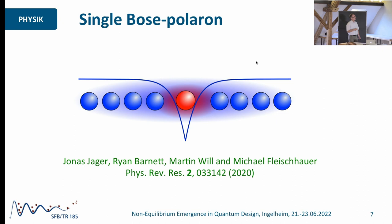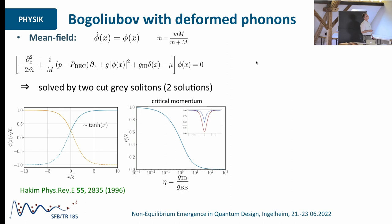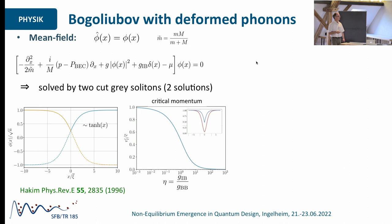Now the first thing is about the single Bose-Polaron. We have a single impurity. What we do is first go into a co-moving frame, co-moving with the impurity, by a so-called Lee-Low-Pines transformation. Then we look at the mean field problem. The mean field equation is nothing else than a non-linear Schrödinger equation with some term taking care of the finite velocity of the gas. Most importantly, we take the interaction with the impurity already into account on the level of the condensate. The nice thing about this equation is you can actually solve it analytically in 1D — basically you cut some grey solitons and stick them together at the position of the impurity.